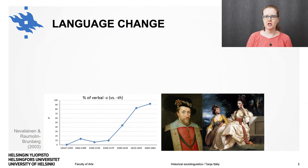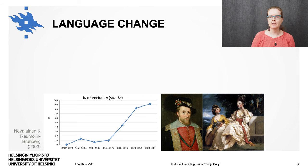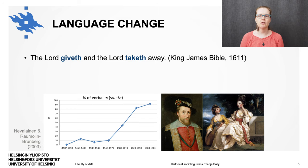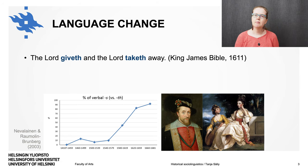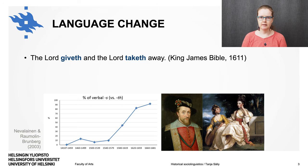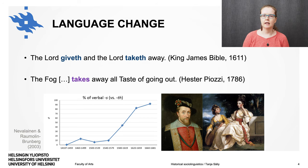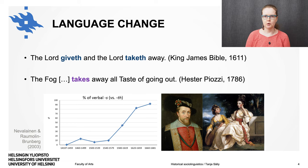How does language change happen? Who makes it happen? In 17th century England, during King James' time, people could still say, 'the Lord giveth and the Lord taketh away,' even though the form 'taketh' was even then regarded as rather old-fashioned. By the next century, people had almost exclusively switched to the new form, 'takes,' like Hester Piozzi here: 'The fog takes away all taste of going out.'